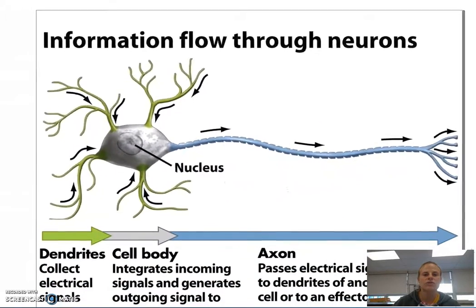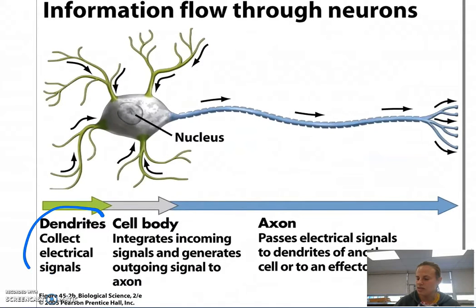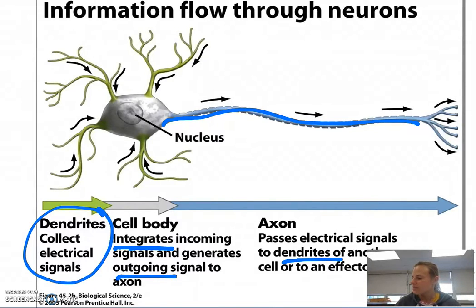So how does information flow through the neurons? Well like I said the dendrites are going to collect the signal, the cell body integrates the incoming signals and then generates an outgoing signal along the axon to the dendrites of another cell or to an effector cell.